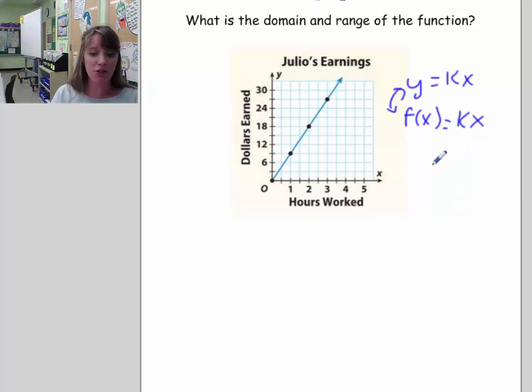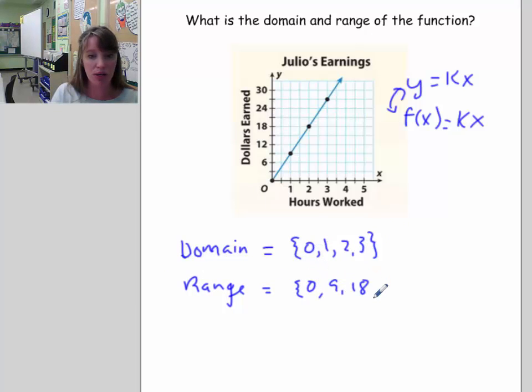If I look back at yesterday's lesson, I try to figure out the domain and range. Remember, the domain is all the x values. So what were the x values from the table that we just created? The domain is going to be equal to the set {0, 1, 2, 3}. And the range is going to be the set of the values that came out: {0, 9, 18, 27}. Now, is that all of the domain? No, it's just the domain that we see from the points that we plotted.